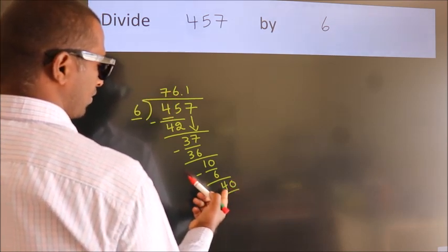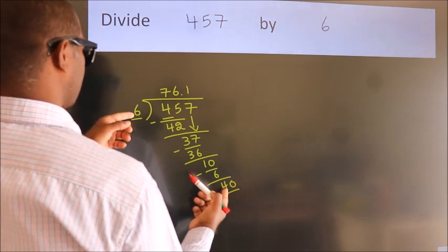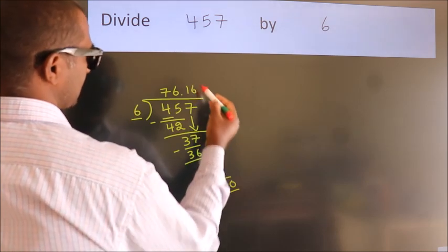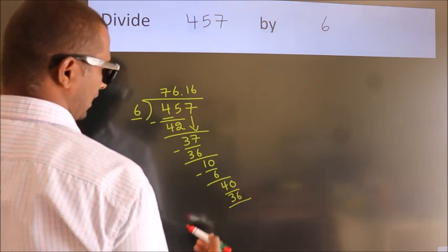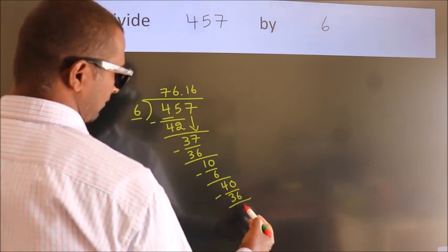A number close to 40 in 6 table is 6 times 6 equals 36. Now, we subtract. We get 4.